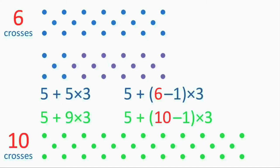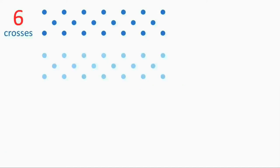Let's return to our chain of six crosses. Here's another way of structuring the dots. We can think of the chain as a row of six dots, with a row of seven dots above it and a row of seven dots below. So we get this expression.